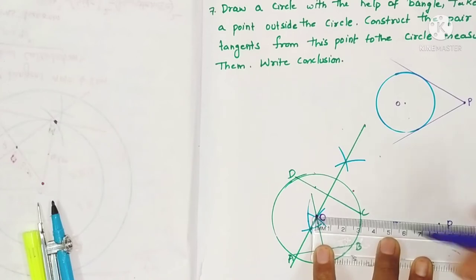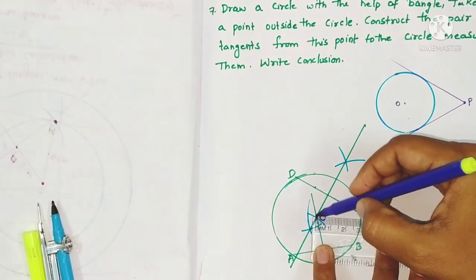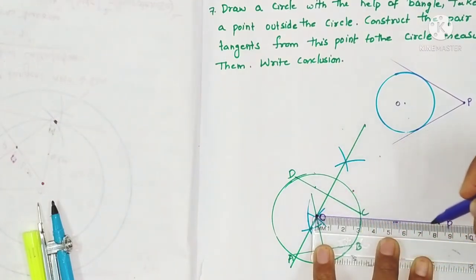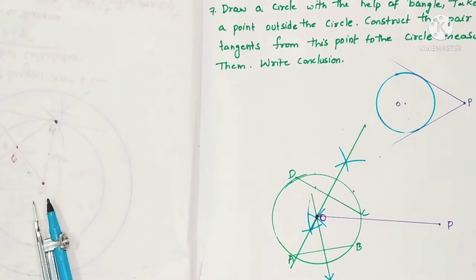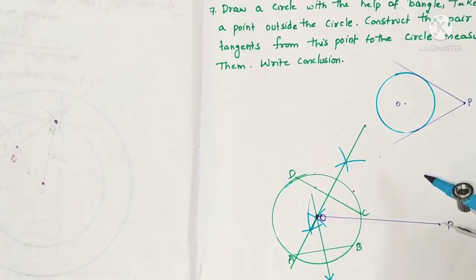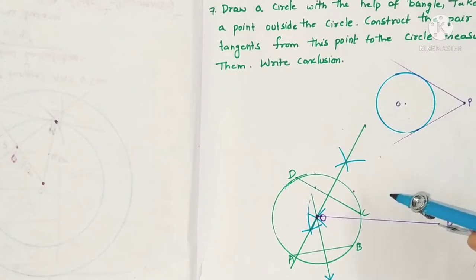From O, locate a point P outside the circle and join OP. Now we have to draw a perpendicular bisector to this line OP.